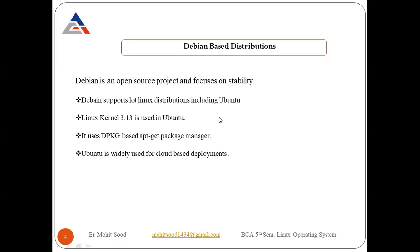Debian is an open source project that focuses on stability and supports many Linux distributions including Ubuntu. There are many versions of Ubuntu like 16.04, 18.04, and 20.04. Linux kernel 3.13 is used in Ubuntu. It uses the dpkg-based apt-get package manager. When you install or remove any software, you use the command 'apt-get install'. This is the installer package.